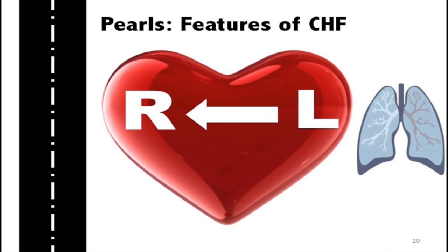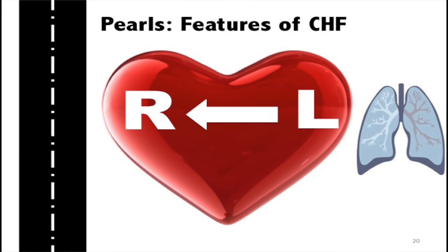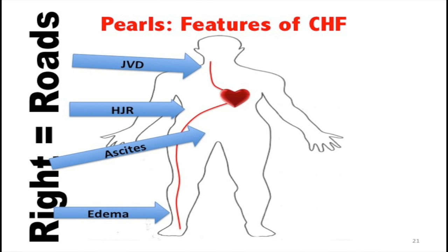Right heart failure stands for roads — the superior and inferior vena cava. Back up congestion down the roads gives JVD, hepatojugular reflex, ascites, and edema. Left heart failure is lungs — dyspnea on exertion, shortness of breath, and rales in the lungs. Redistribution symptoms: these people become sicker when they lay down, so they sleep on more pillows, wake up coughing, and pee more at night due to increased intravascular volume.